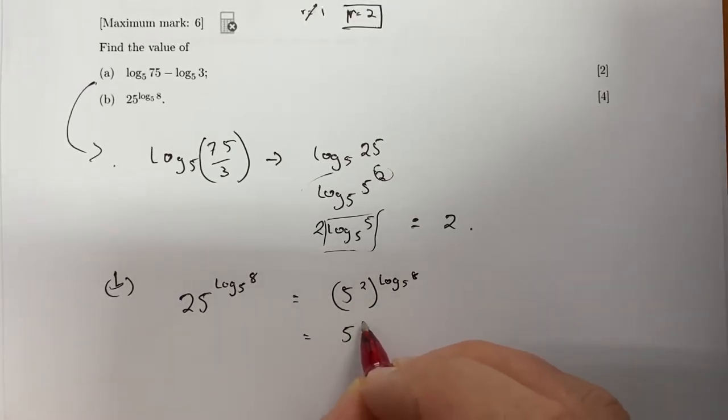That's 5^(2log₅8). Now that 2 can be multiplied up, kind of like the opposite of the previous example - I'm just using the rules of logs here. So 8 squared is 64.